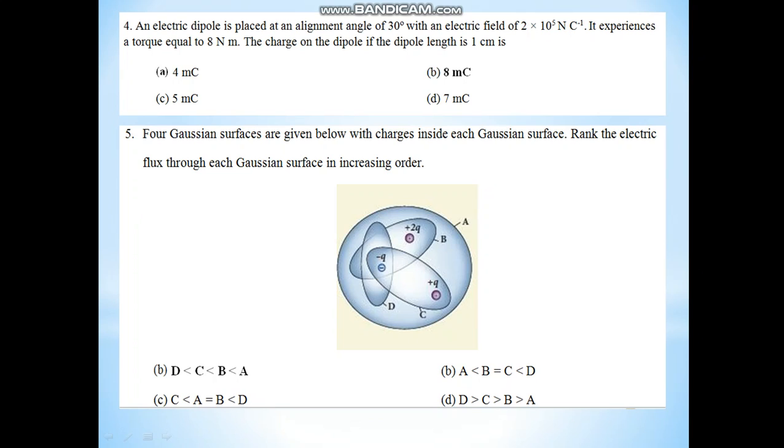An electric dipole is placed at an angle of 30 degrees with an electric field of 2 into 10 power 5 newton per coulomb. It experiences a torque equal to 8 newton meters. The charge on the dipole, if the dipole length is 1 centimeter. Use the formula: tau equals Q E into 2d sin theta. Substitute the values. Charge Q equals tau by 2dE sin theta. We know tau equals P sin theta, where P equals 2Qd. So Q can be calculated.